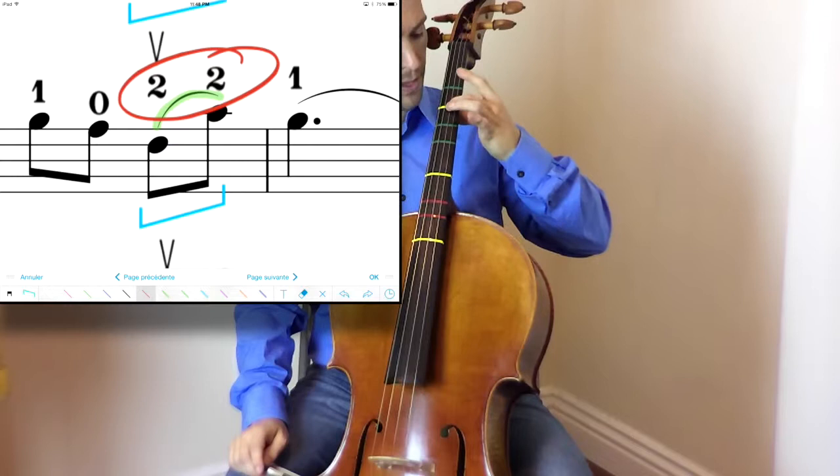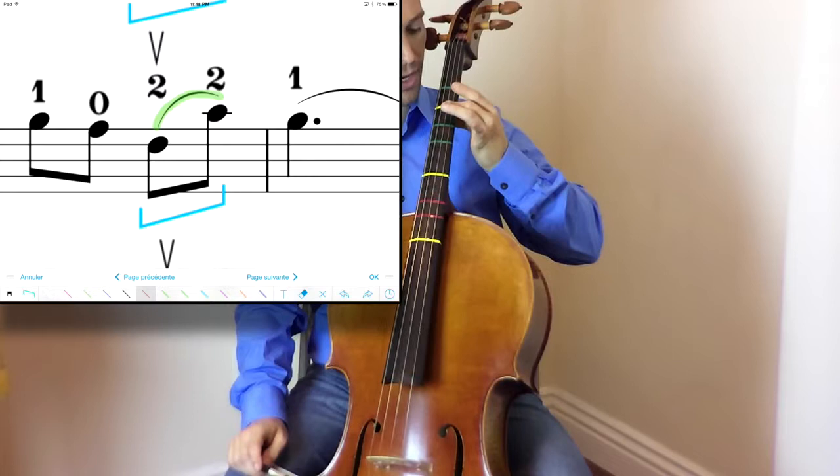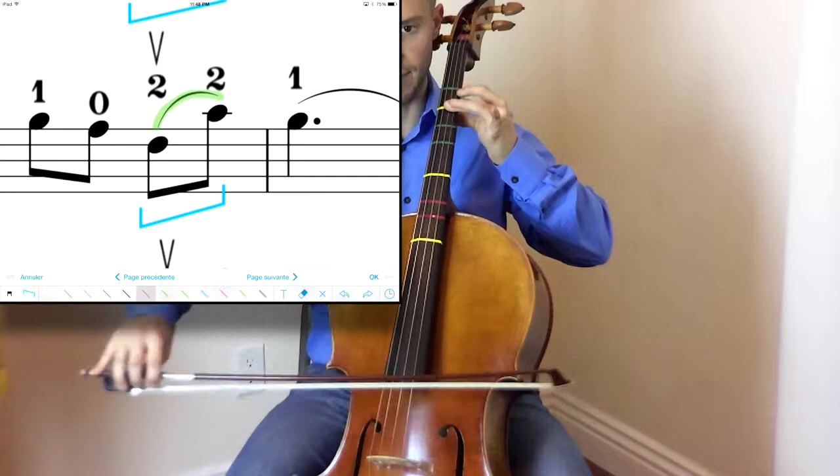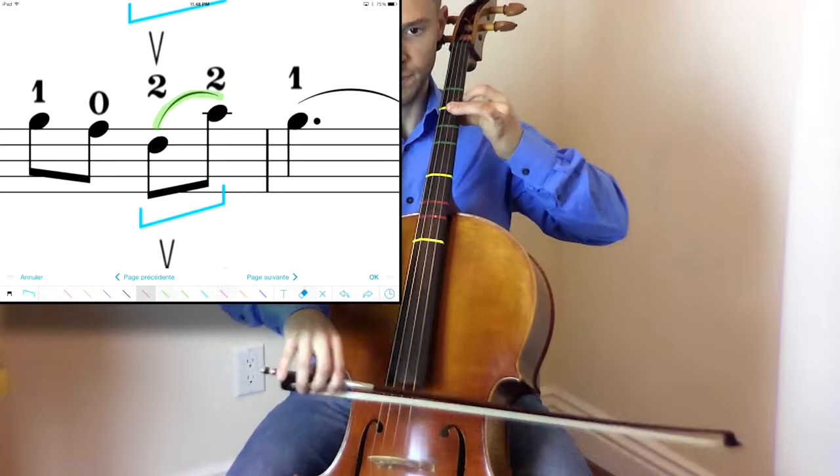Measure nine. We have a two, two. Now, you can roll your finger across or you can do something called a bar. You can place your finger nice and flat across. And when you do this, just remember you're going to lose your shape of your hand. So, I'm going to bar this across like a capo on a guitar. Again, push down both strings.